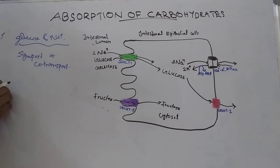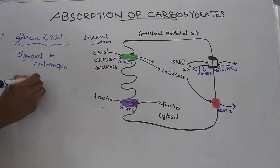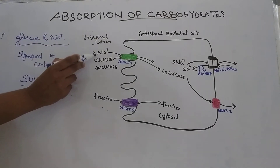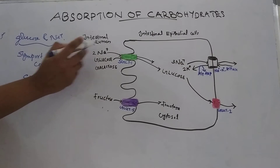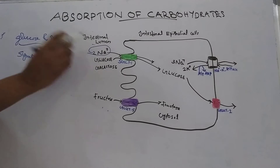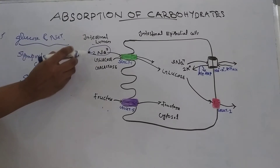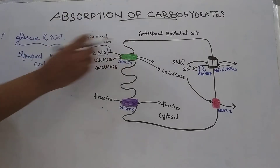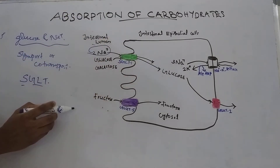This transport system is known as the sodium-dependent glucose transporter, or SGLT. The concentration of sodium is higher in the intestinal lumen than in the mucosal cells, so sodium moves into the cells along its concentration gradient. At this time, glucose is also transported into the intestinal cells from the lumen.